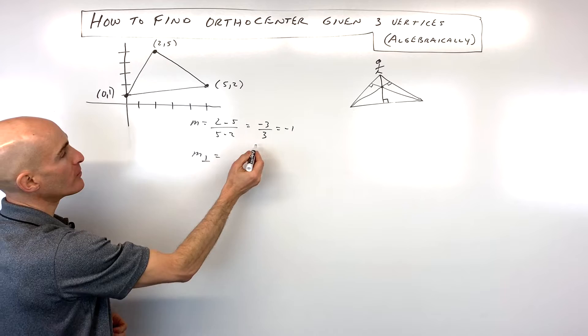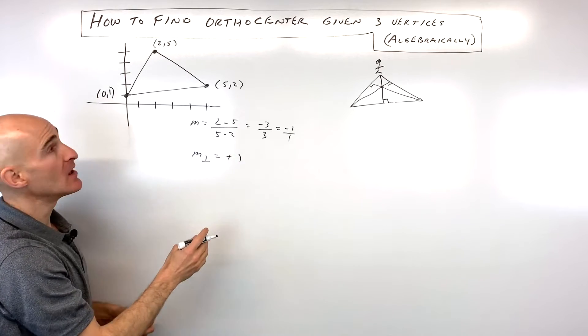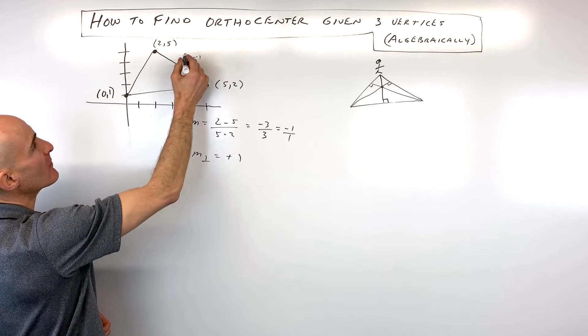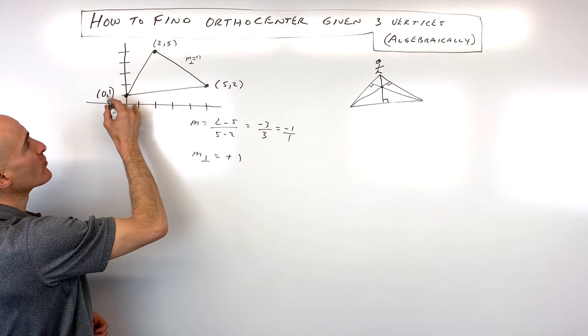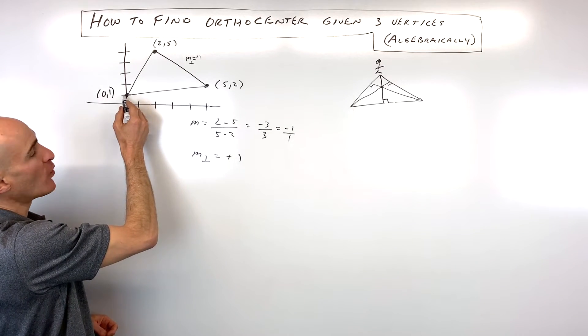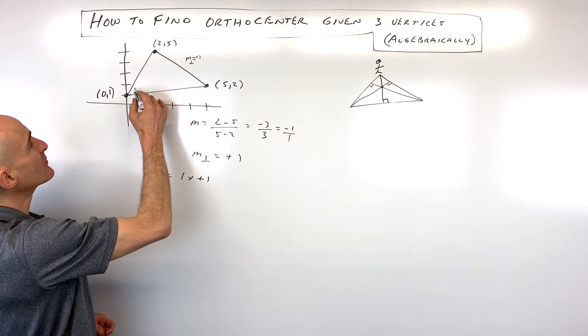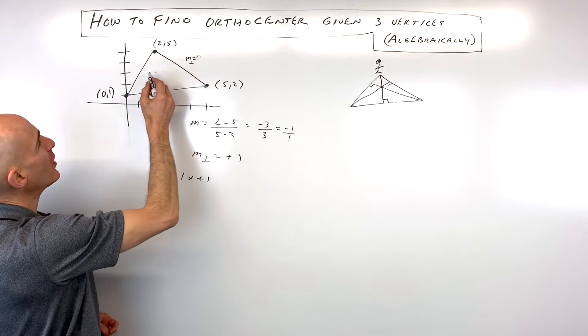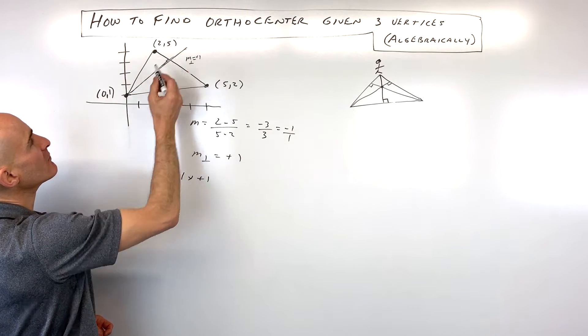To find the perpendicular slope, we flip it over and make it opposite, giving us positive 1. We know the line goes through point (0, 1), so the y-intercept is 1 and the slope is 1. Our equation is y = x + 1. Up 1 over 1, up 1 over 1, so it looks like that. My diagram isn't perfect, but that's the basic idea.